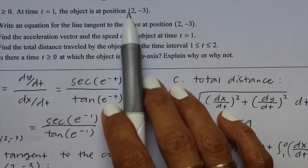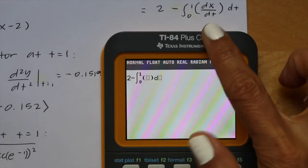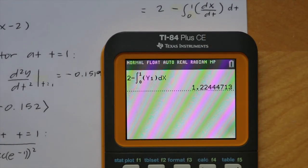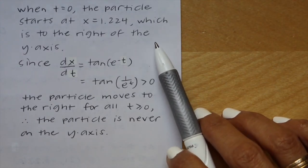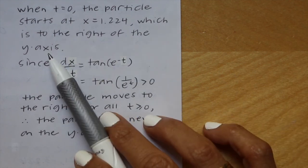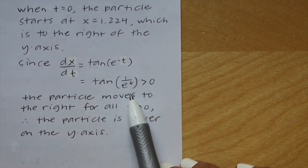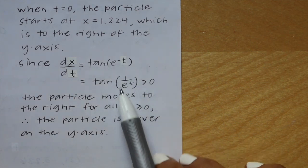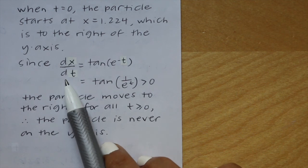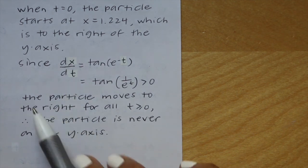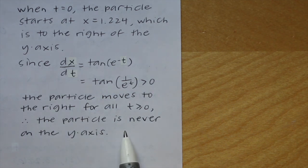The x-coordinate when t equals 1 is 2. Bringing the negative out and flipping the limits, with dx/dt as y1, we get x equals 1.224 when t equals 0. Since dx/dt is tangent of e to the negative t, rewritten as tangent of (1/eᵗ), this argument is always positive, so tangent is always positive. Therefore the particle always moves to the right for all t ≥ 0, and is never on the y-axis.